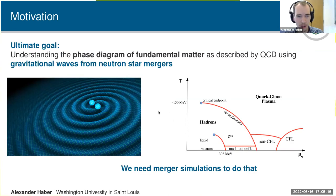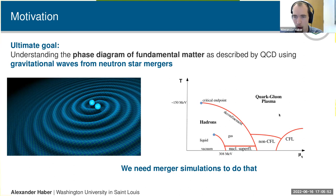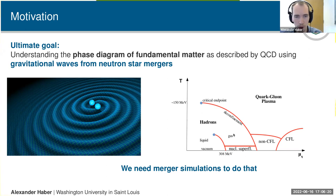We want to use neutron star mergers to understand the QCD phase diagram — a phase diagram of fundamental matter as described by quantum chromodynamics. On one axis you have temperature (around 150 MeV scale), and on the other you have chemical potential or density. There is the famous confinement transition from hadronic matter to quark-gluon plasma, a possible critical endpoint, nuclear superfluidity, color superconductivity, and the liquid-gas phase transition. Much of this is educated guesses — quite a bold version of the phase diagram.